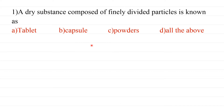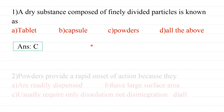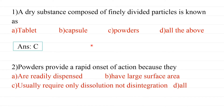Second question: Powders provide a rapid onset of action because they are readily dispersed, have a large surface area, usually require only dissolution and not disintegration, or all of the above.